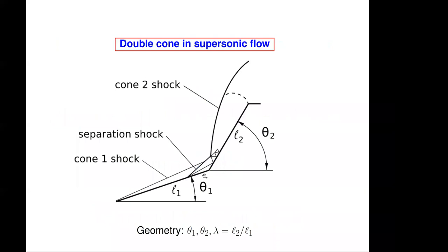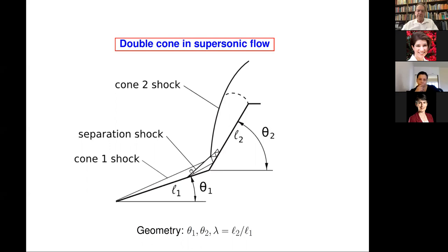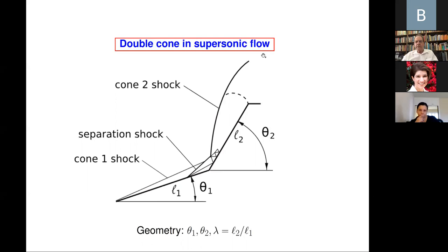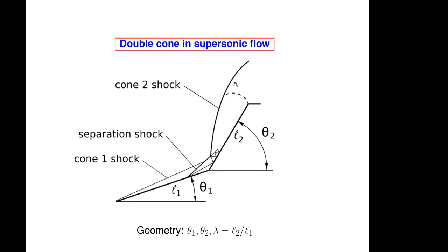So the double cone in supersonic flow. Here is a model. This is the first cone of length L1 and angle theta one, and this is the axis of the model. And here is the second cone of length L2 and angle theta two, which is larger than theta one, usually in flows of interest. Usually we pick the first cone such that the shock wave on the first cone is attached and the flow after it is supersonic, and the second shock wave on the second cone is detached and strong and causes the boundary layer that arrives on the first cone to separate.